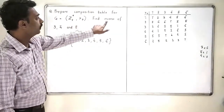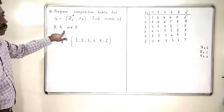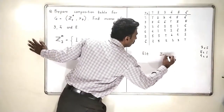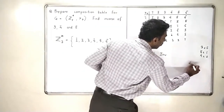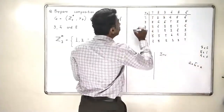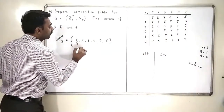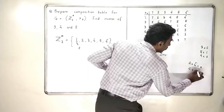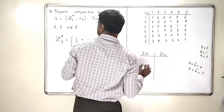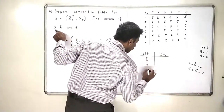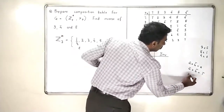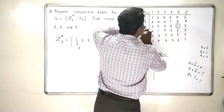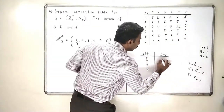In the second part of the exercise, we are supposed to find the inverses of 3-bar, 4-bar, and 5-bar. To find the inverse, a-bar multiplied by b-bar must equal the identity. The identity of this group is 1-bar, because multiplying 1-bar by any element gives back the same element. So we need a-bar × b-bar = 1-bar. For 3-bar: looking in the 3-bar row for 1-bar, we find 3-bar × 5-bar = 1-bar, so the inverse of 3-bar is 5-bar.